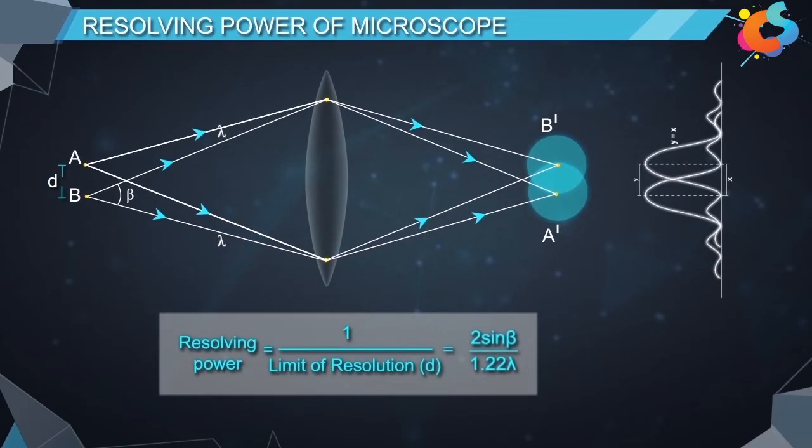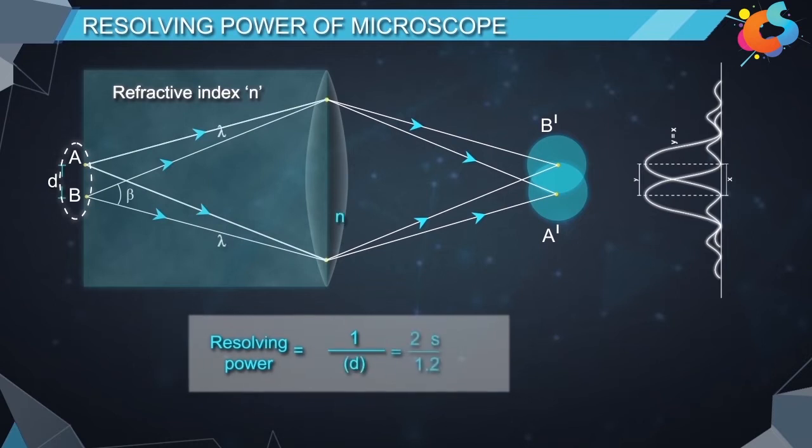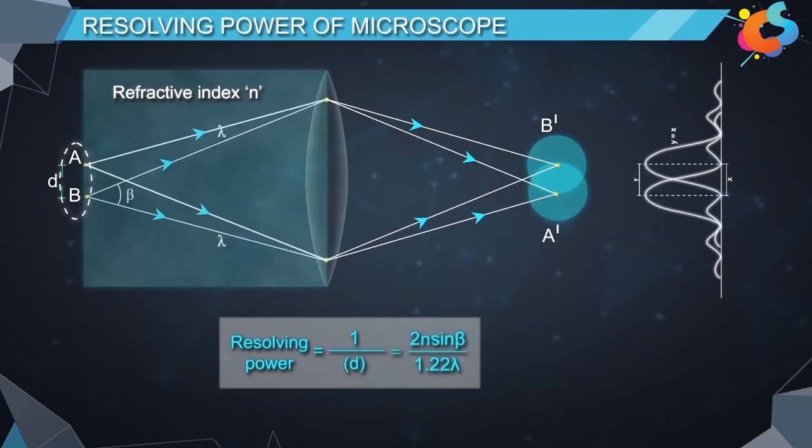Now, if the air medium between the object and objective is replaced by a medium of refractive index N, then the resolving power of the microscope will be equal to 1 by D is equal to 2 N sin beta divided by 1.22 lambda.